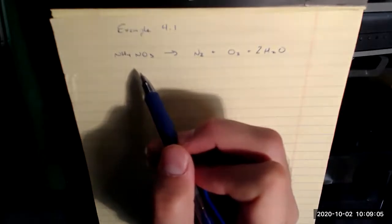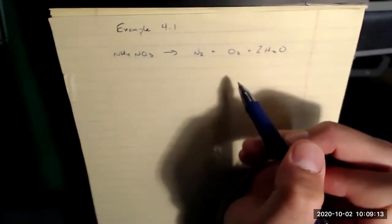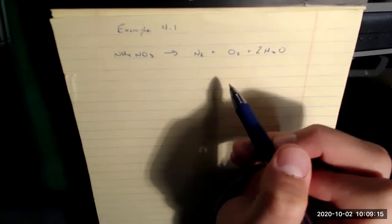And how many do I have on the right-hand side? Well, now I have one, two, three, four. Keeping in mind that this has a coefficient of two. So that is going to have to be fixed.